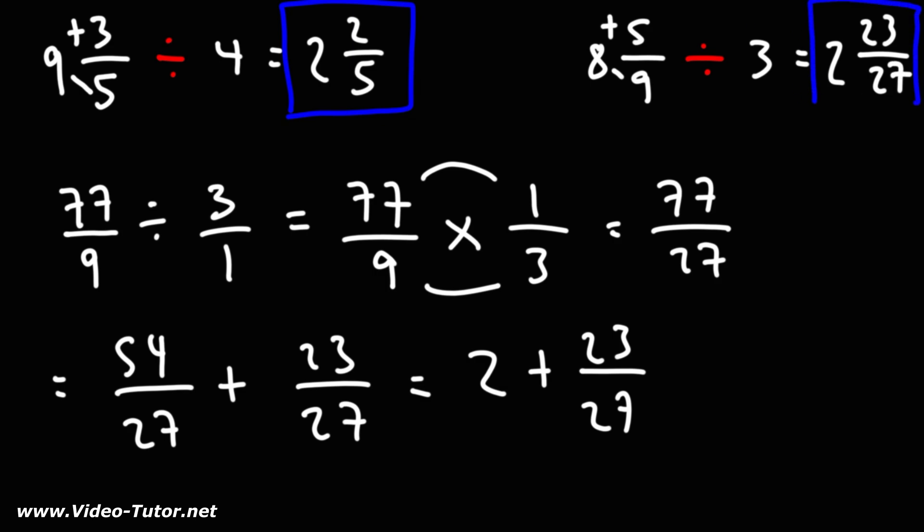So now you know how to divide a mixed number by a whole number. Convert the mixed number into an improper fraction. And convert the whole number to another improper fraction too. Divide the two fractions. And then convert your final answer from an improper fraction back to a mixed number.